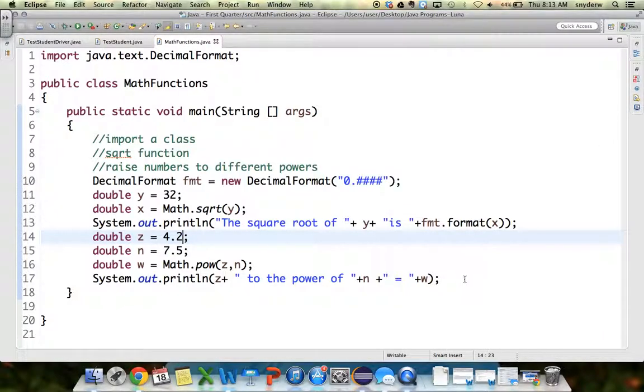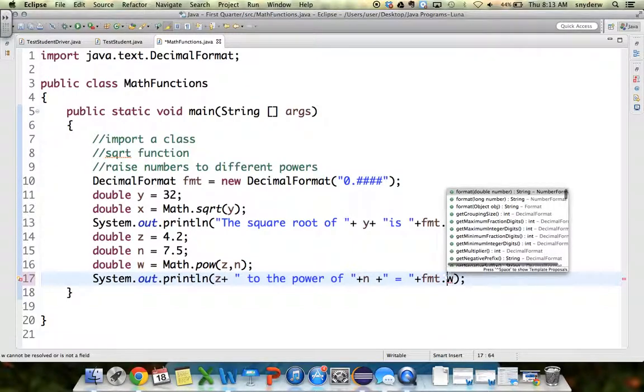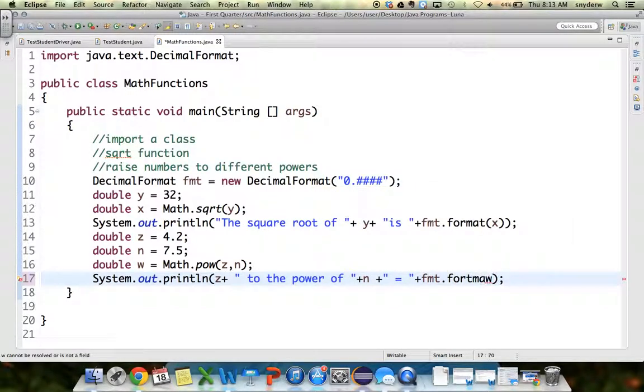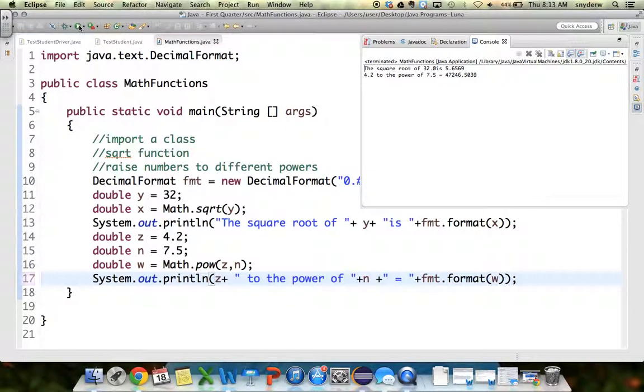Now let's format that. Well, in front of w, you'd put fmt, the variable we made, the word format, the word Java made, and put w inside parentheses. And now you've formatted that number four decimal places.